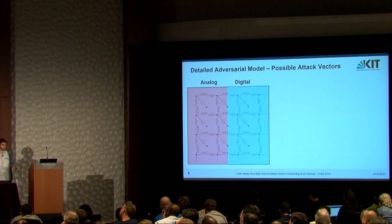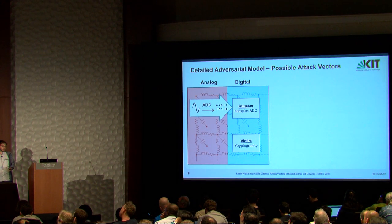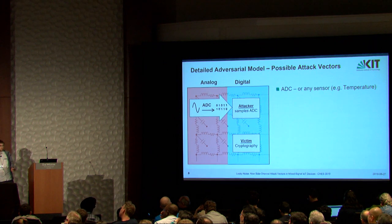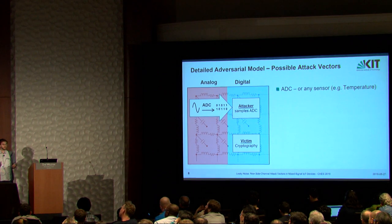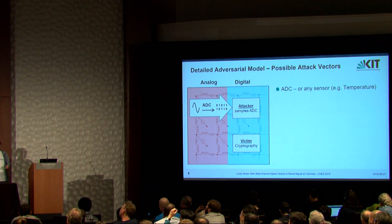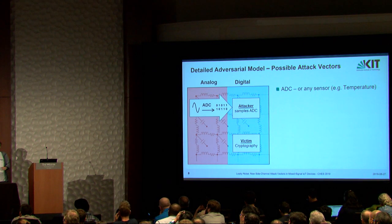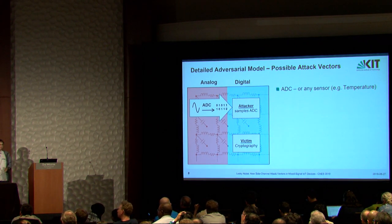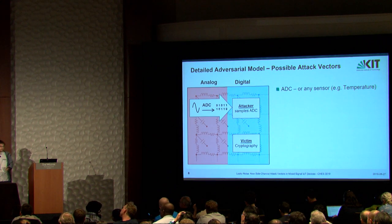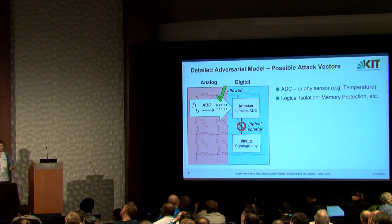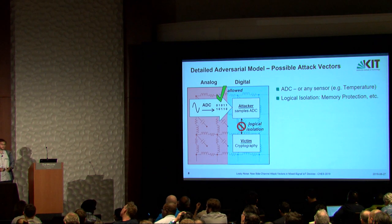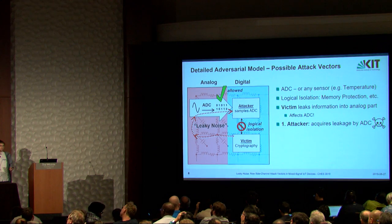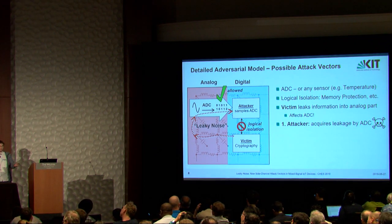In our adversarial model, we have a digital side with an attacker that can sample an ADC and a victim that runs some cryptographic algorithm. This ADC can also be any other sensor — modern high-performance chips add many sensors inside the chip to assess runtime performance, aging, temperature, and so on. The ADC could be legally used by the attacker while other measures in the system, such as memory protection, prevent direct communication between attacker and victim. However, the victim could leak into the analog part, and the attacker can acquire back this leakage through an ADC.